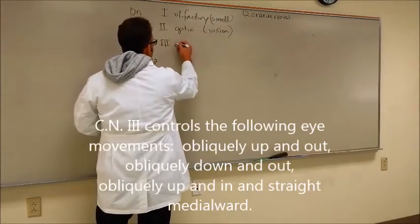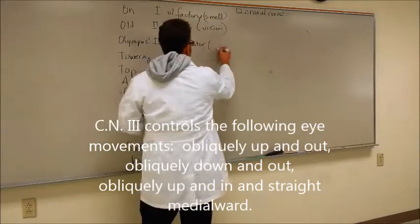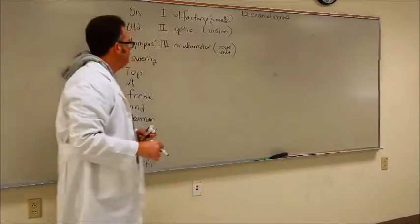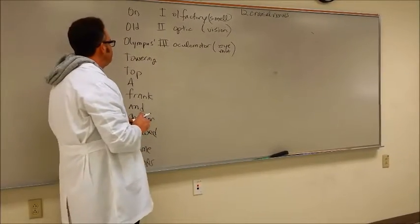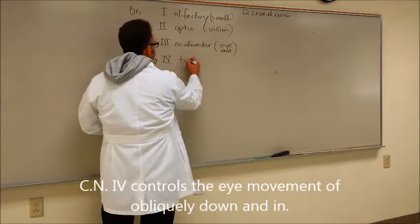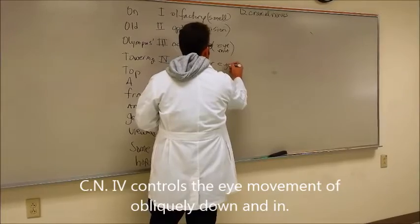Three is oculomotor, and that is for eye movement. I'm giving you kind of a basic slowdown here, not getting extremely specific. Towering is four, and this is trochlear, also eye movement.